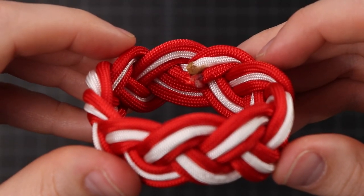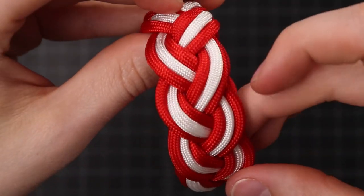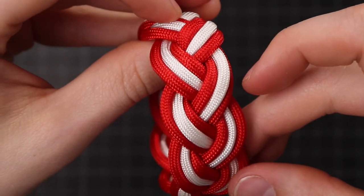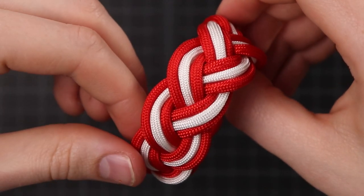Hey guys, welcome back to Paracord Planet. Occasionally on this channel we like to look back over our past videos and see which ones need some improving. In this video we're going to be doing the 3-lead 10-bite Turk's Head Bracelet. The last one was done in one color and we're going to be adding a second color for this one.